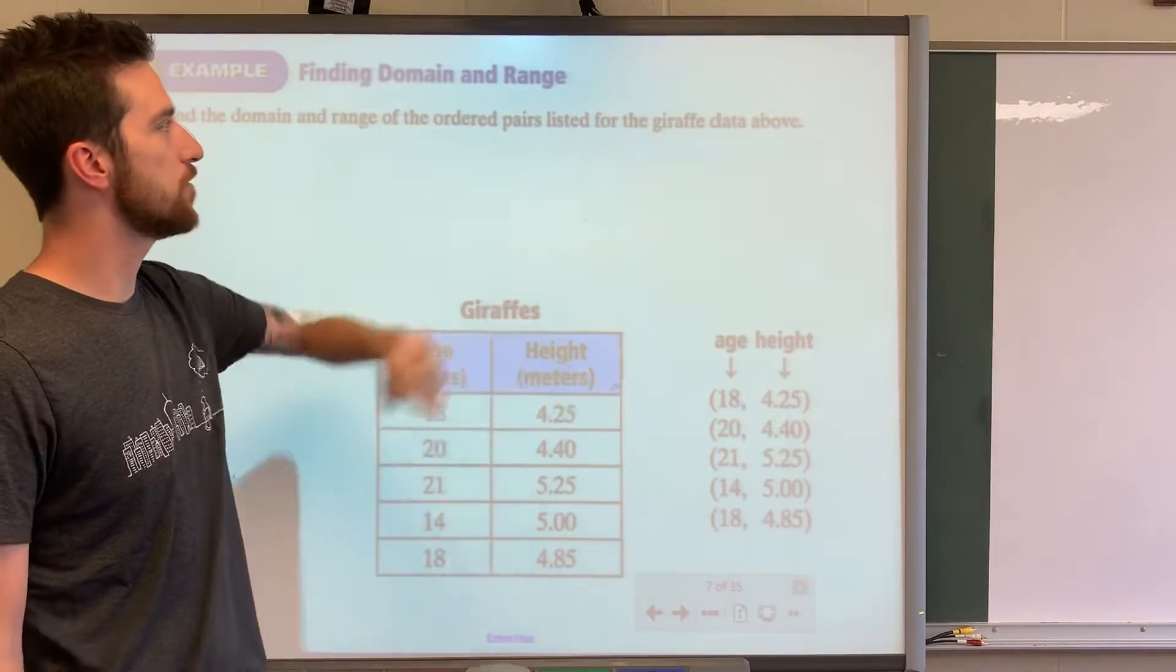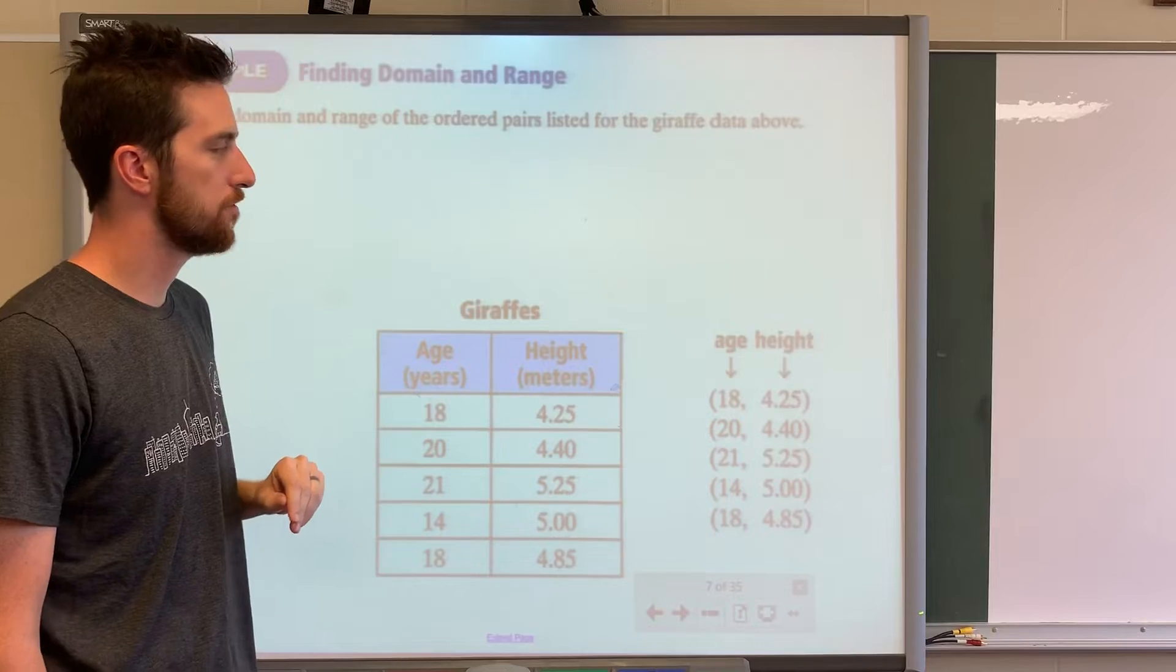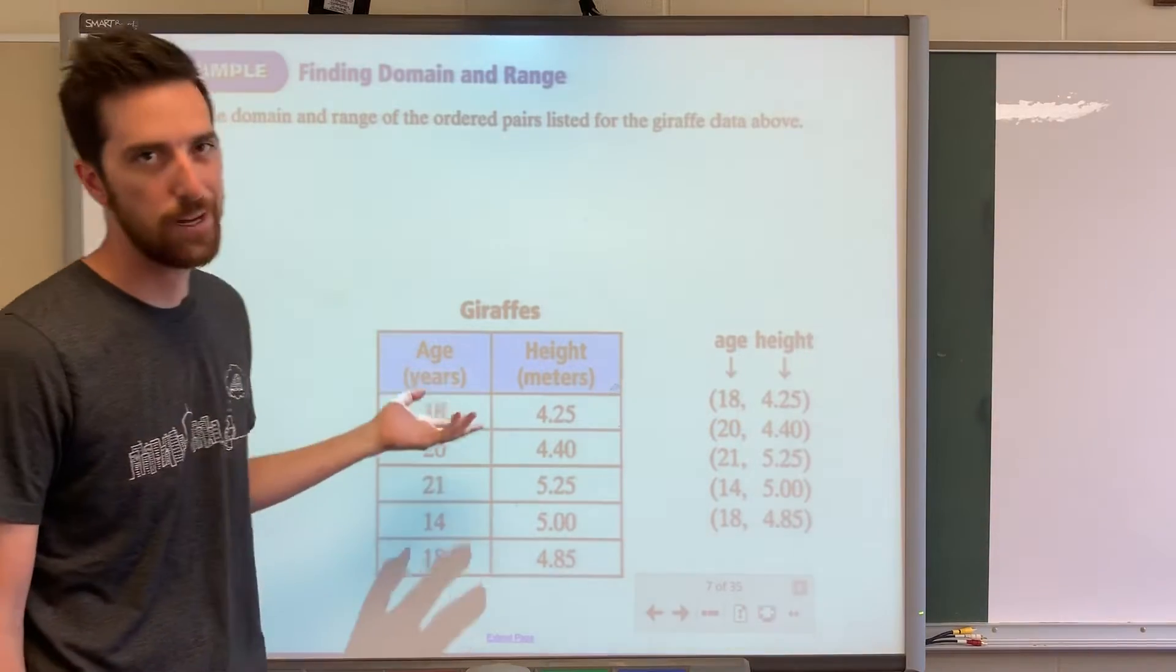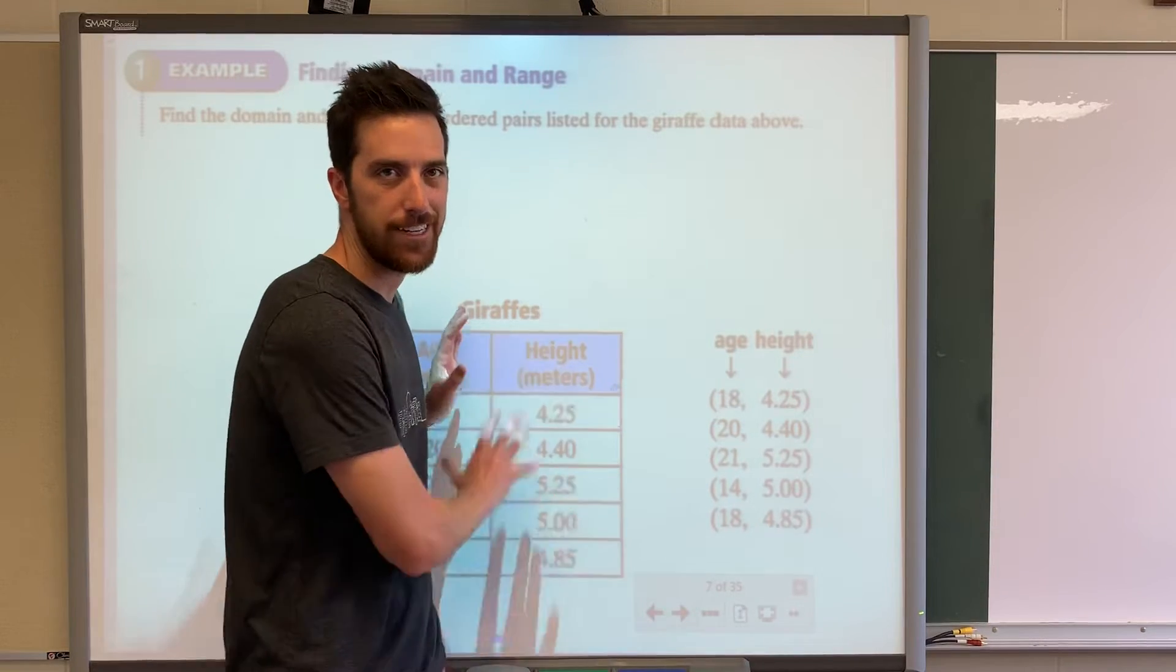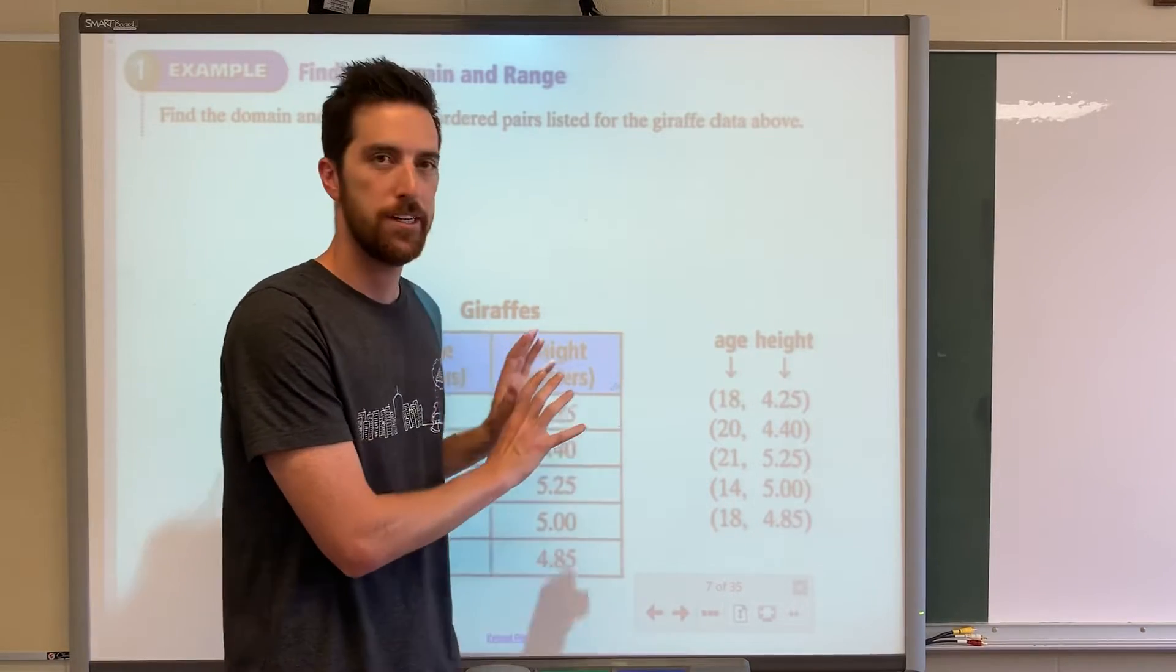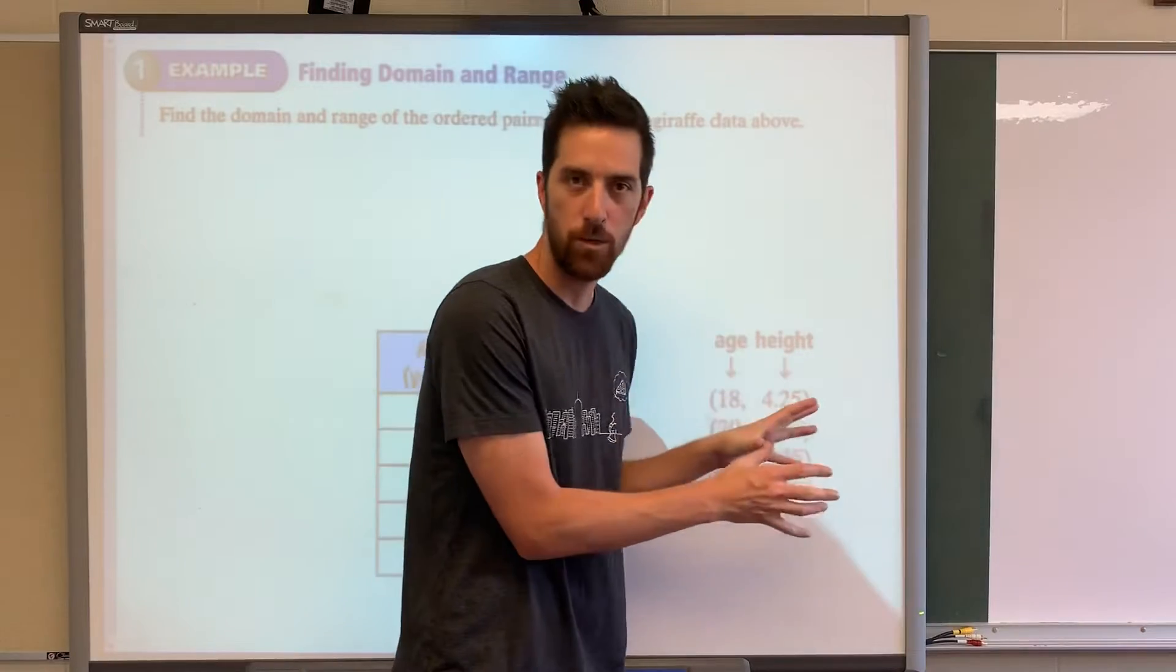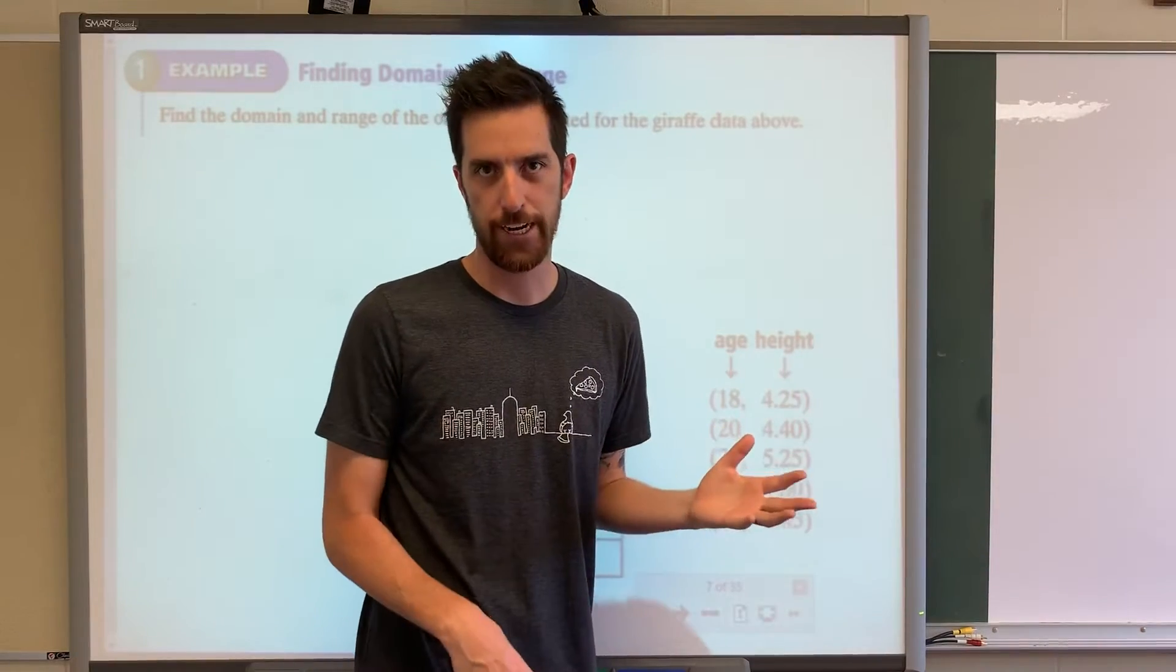Find the domain and range of the ordered pairs listed for the graph data above. I put it below so I could make it larger, but sometimes you're going to get it as a table or a chart. Sometimes you're going to get it as coordinates. Many times you're going to get it as coordinates.